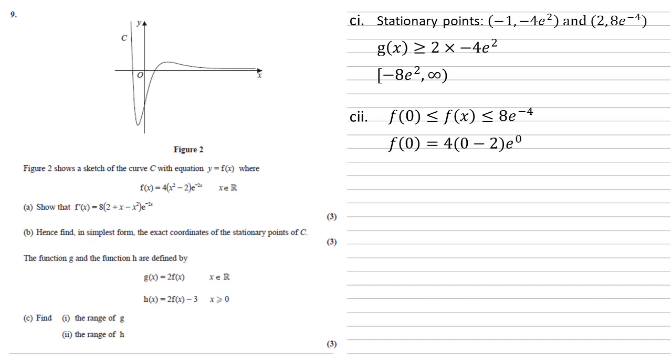Let's find f of zero. Putting that into our equation for f, we would get four lots of zero minus 2 times e to the zero, which is minus 8. So f of x lies between minus 8 and 8e to the minus 4, when x is larger than or equal to zero.